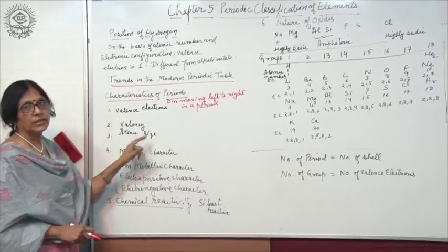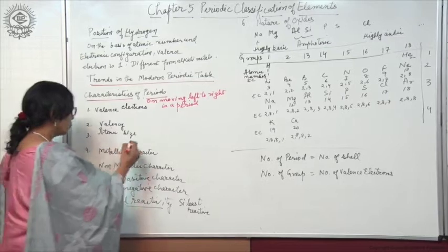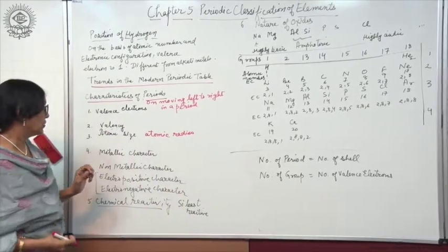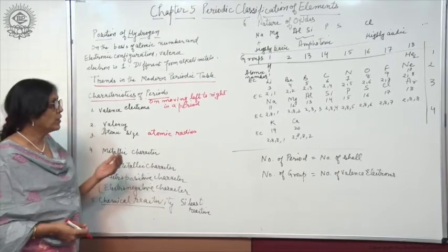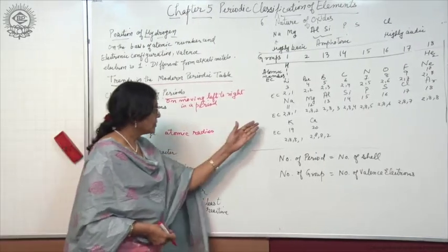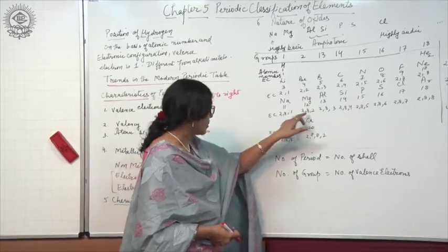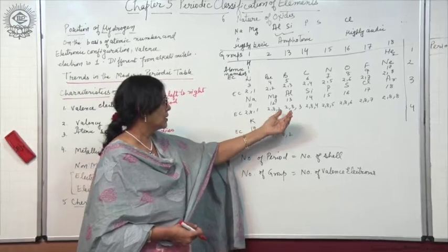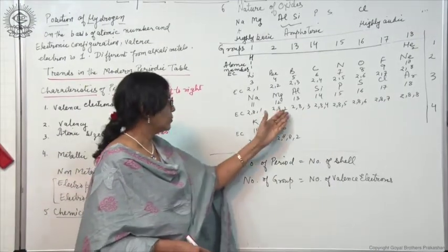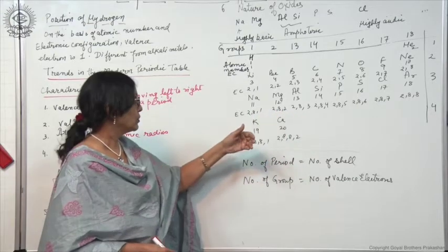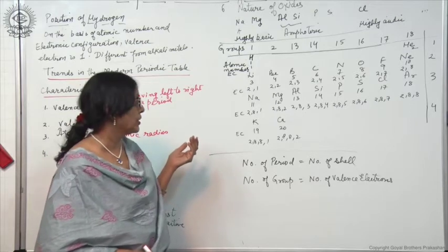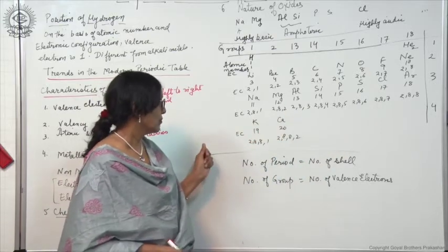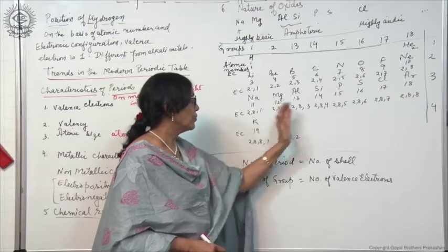Now let us see the atomic size, which refers to atomic radius. As we move from left to right in a period, electrons are added to the same shell — the shell is not increasing, only the valency electrons increase. The nuclear charge also increases, so the hold of protons on the electrons increases, due to which the atomic size decreases on moving left to right in a period.